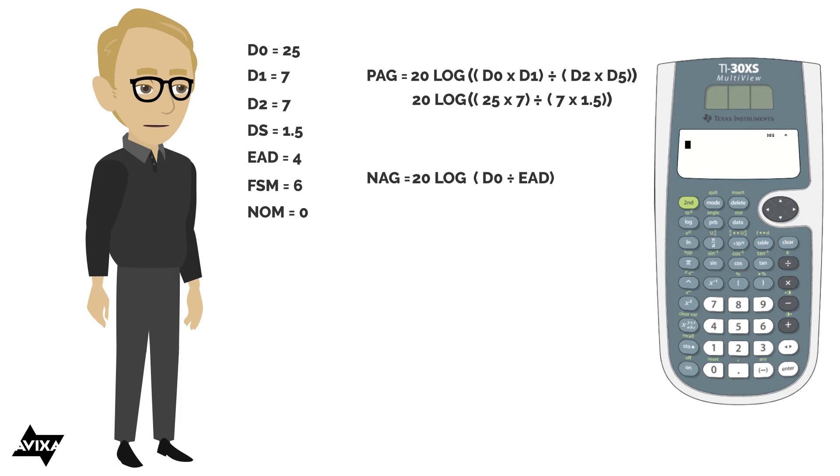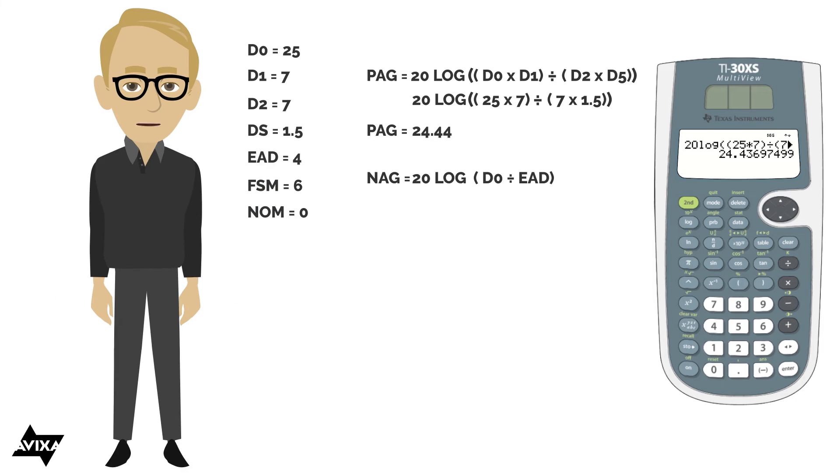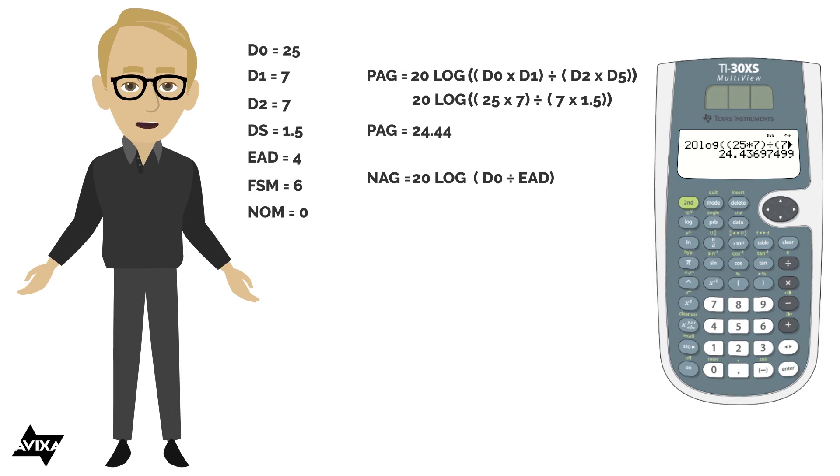All right, so let's plug this into our calculator and let's see what we get for a PAG. So 20 times the log, open up a second paren, 25 times 7, close that paren, divided by, open up a paren again, 7 times 1.5, and then two parentheses to close. The enter button, and we end up with, so far, we're not done yet, a PAG, and it's going to be okay to round this, 24.44. So 24.44. So that's what we have for a PAG so far.